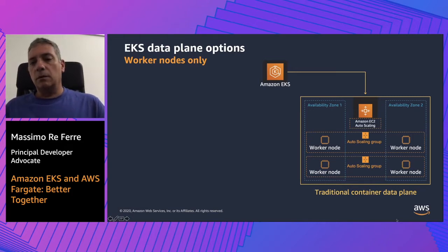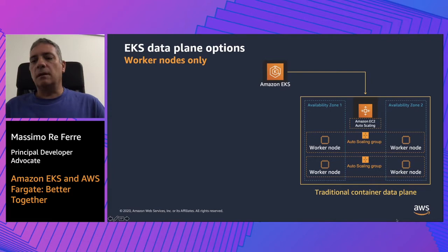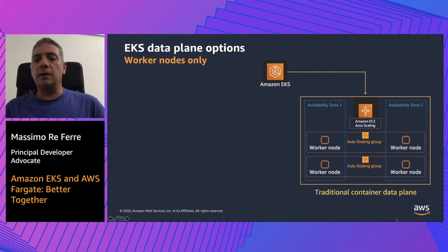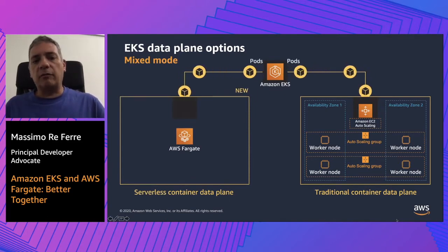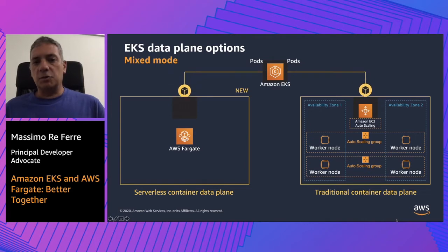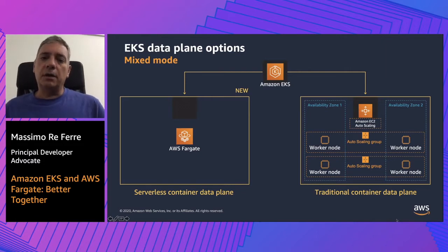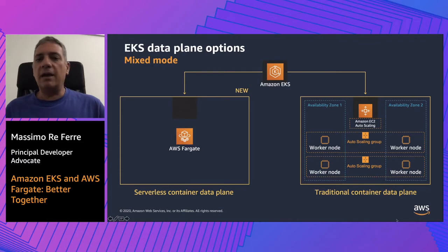The important point is that these worker nodes or EC2 instances run inside your account. These worker nodes can be unmanaged — where you manage them entirely — or we provide a managed worker node feature for Amazon EKS that takes over some of this responsibility from you. In addition to being able to deploy pods on this traditional container data plane based on traditional worker nodes, you can now deploy your pods onto what we refer to as a serverless container data plane, which Fargate represents. With AWS Fargate and EKS you can deploy pods without having worker nodes.